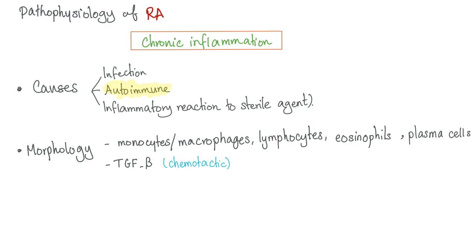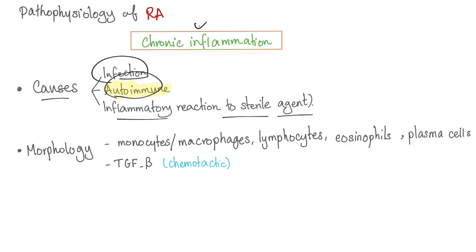Pathophysiology of rheumatoid arthritis — this is not going to be easy. You need to clear your mind. Chronic inflammation — causes include infection, autoimmune, and inflammatory reaction to sterile agents such as silica. In rheumatoid arthritis, it's an autoimmune cause of chronic inflammation.